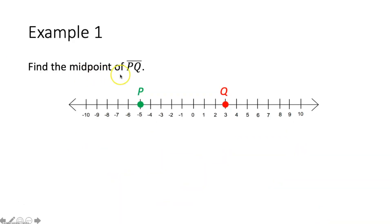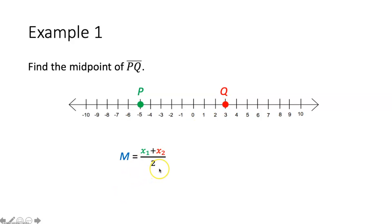Example 1 says find the midpoint of segment PQ. So here we have segment PQ with endpoints on a number line. How do I find the midpoint of this segment with endpoints on a number line? There's actually an easy way to do this. What you're going to do is take each of those x-coordinates, add them together, and divide them by two. You're basically just averaging the x-coordinates on your given number line.